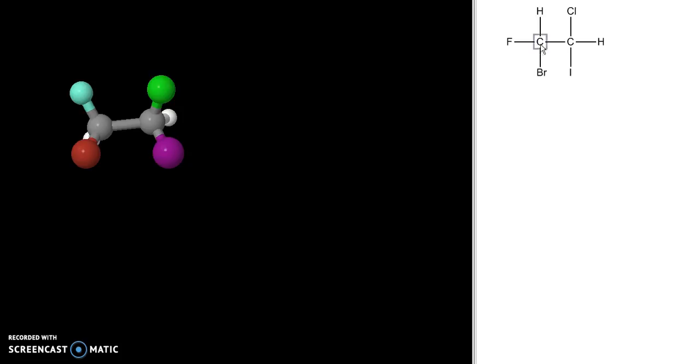Now we know that since this has two stereocenters, it can have at most two to the two, or four possible stereoisomers. The way that I like to approach this problem is to draw my stereoisomers in the Sawhorse projection form.